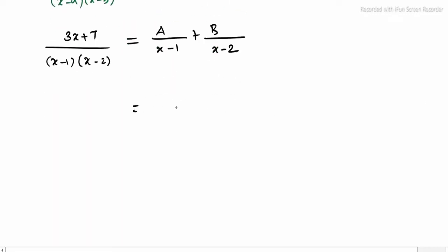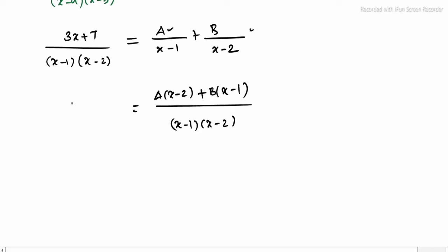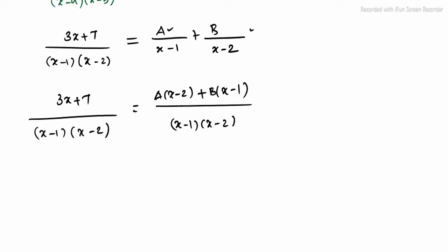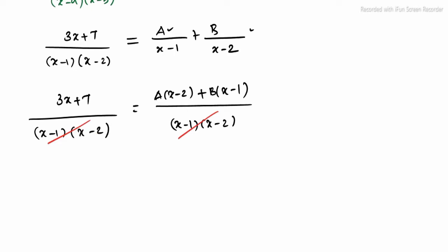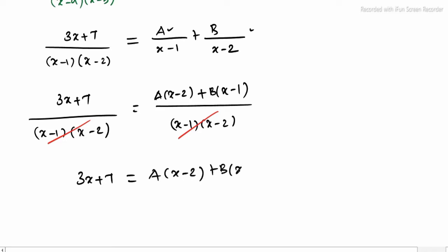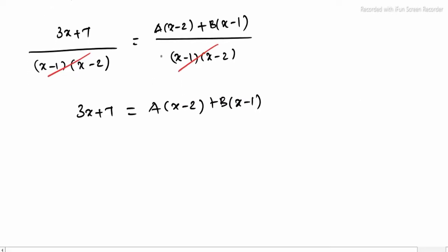Now taking LCM as (x minus 1)(x minus 2) and comparing both sides — multiply A by (x minus 2) and B by (x minus 1). So the left side is (3x + 7) divided by (x minus 1)(x minus 2). Taking LCM and cancelling the denominator: 3x + 7 = A(x minus 2) + B(x minus 1).